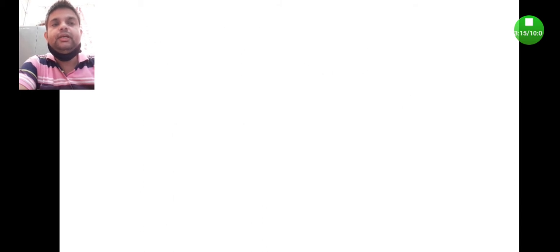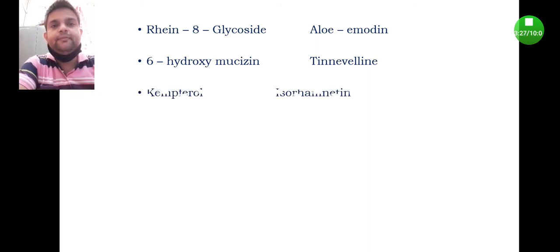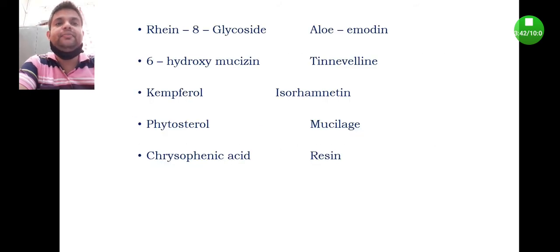Moreover, it also contains rhein-8-glycoside, aloe-emodin, and other compounds present in very minimum quantity, but the main ingredient, main active constituent present in Senna, is sennoside.